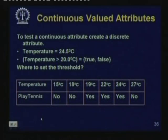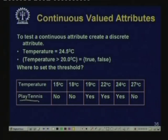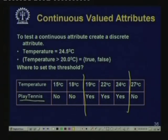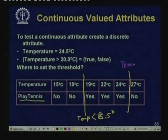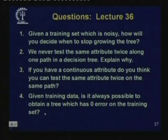Here is another example of handling a continuous attribute. We have temperature and the class we are trying to learn is the play-tennis class. We order temperature in ascending order — 15, 18, 19, 22, 24, 27 degrees — and for each instance we write down the class. We see the points where the temperature value changes class, and we will take one of these as the cut point. For example, if we take a cut at 24.5 degrees centigrade, we test whether temperature is less than 24.5. For each possible cut point we find the information gain and select the one with highest information gain. With this we stop today's lecture.